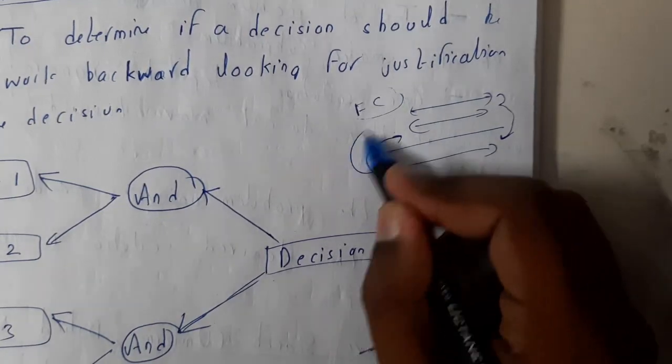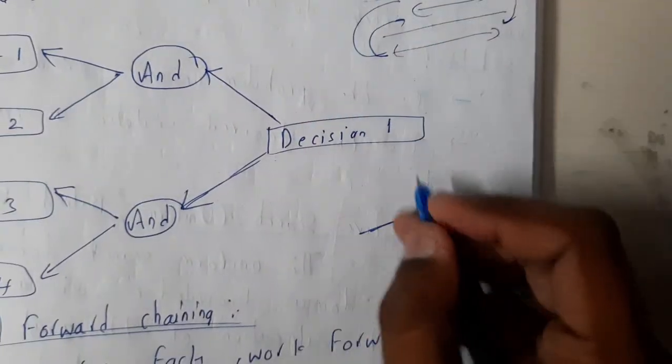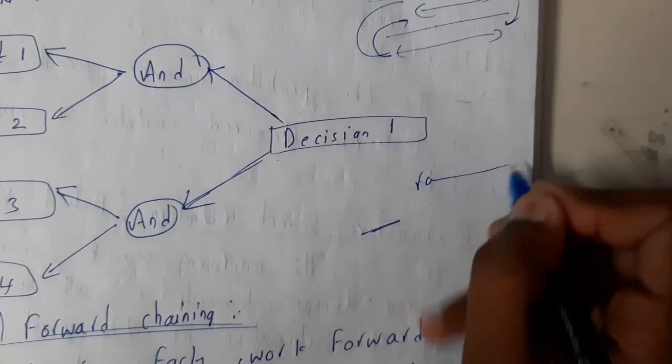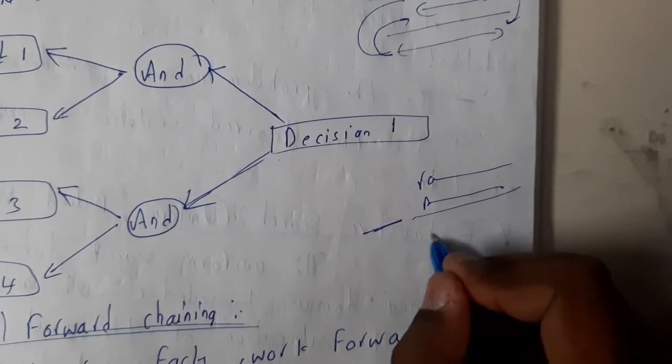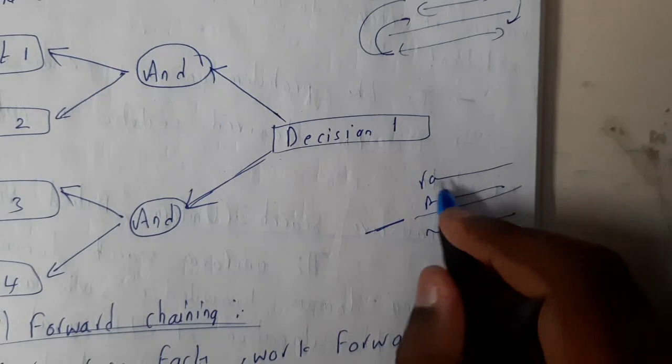Whereas backward chaining is nothing but from result you will be finding the facts. If you take a small example, Ramu is a boy, all boys are good, okay?